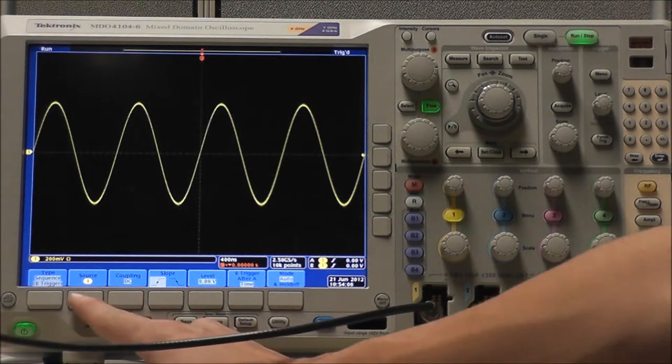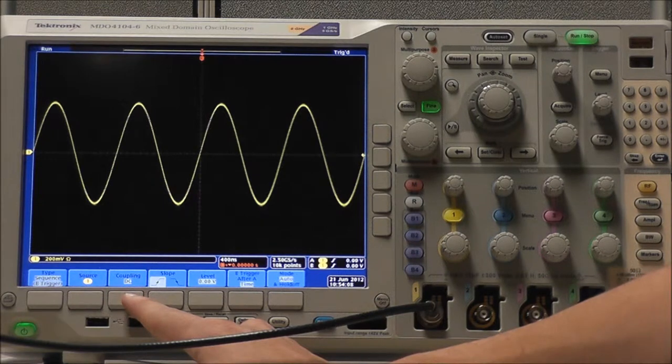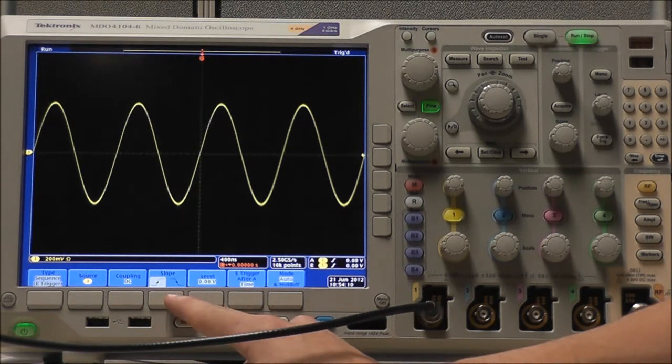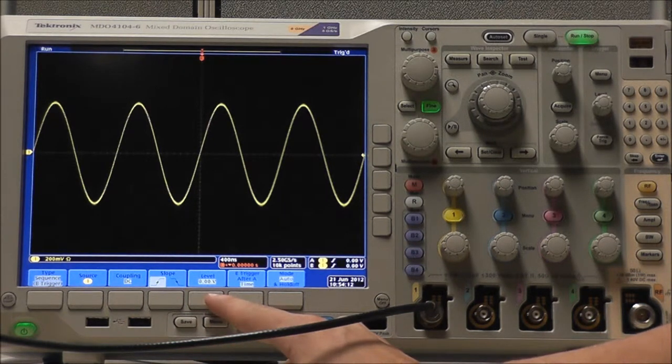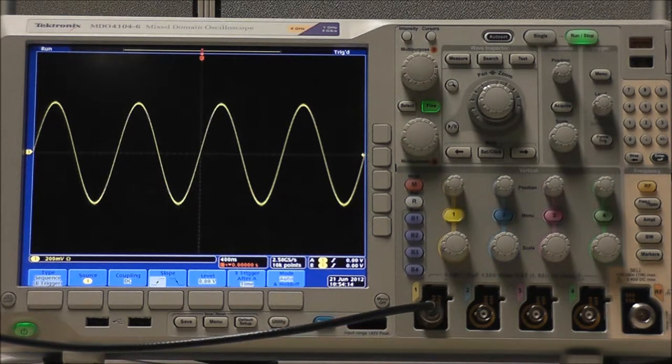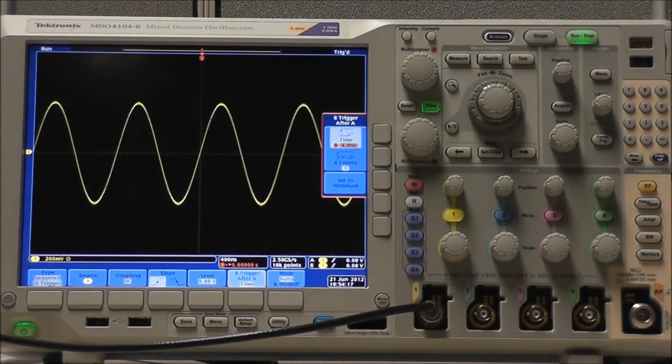And as always with an Edge Trigger, we can choose our Source, Coupling, Slope, Trigger Level, and Mode and Holdoff. However, we can now also select our B Trigger after A dependency.